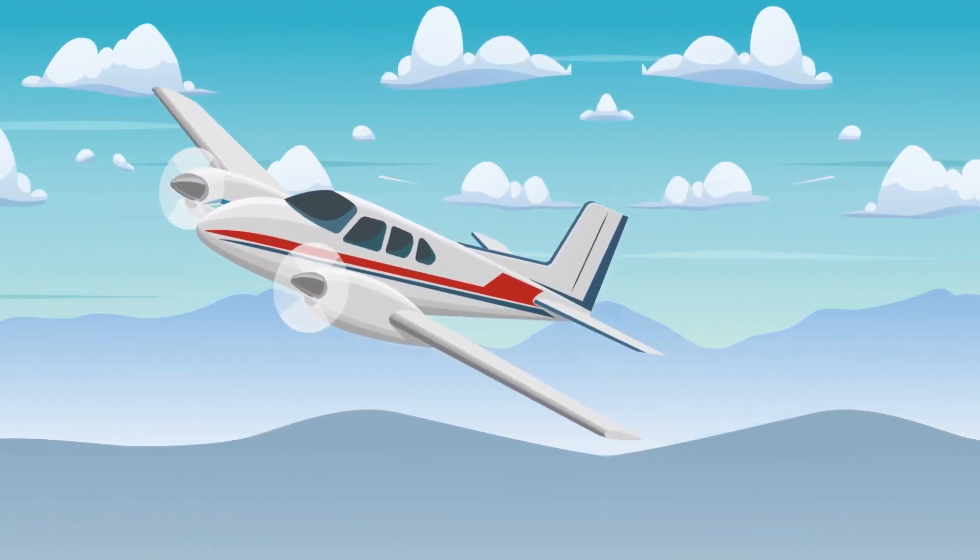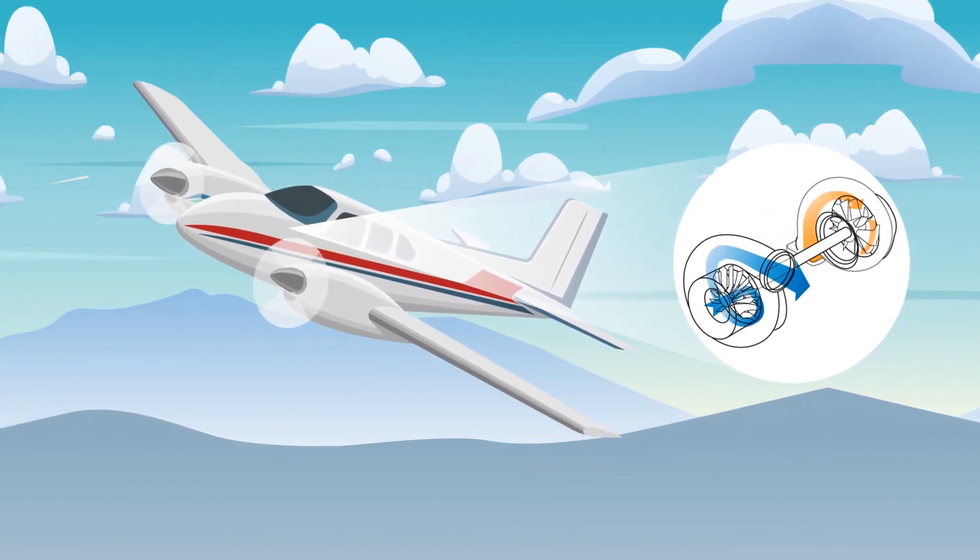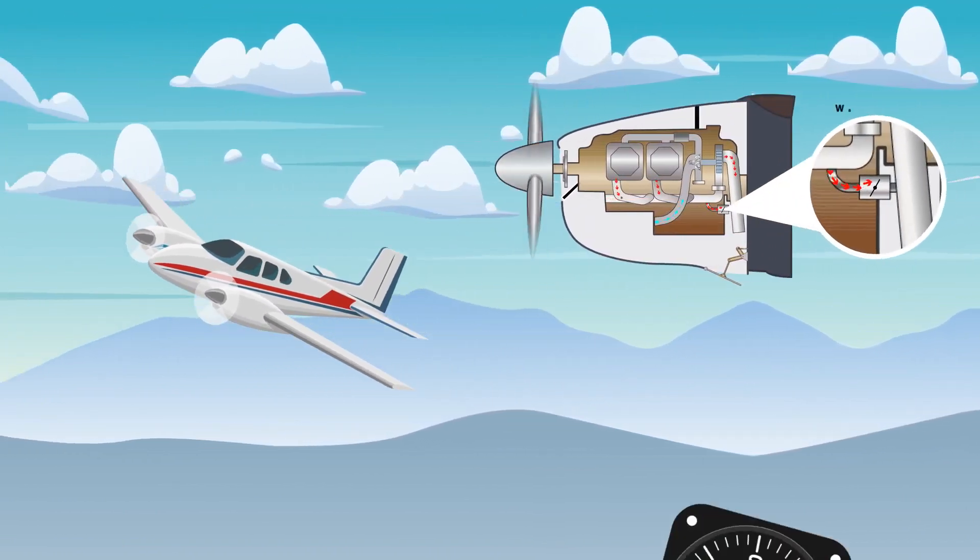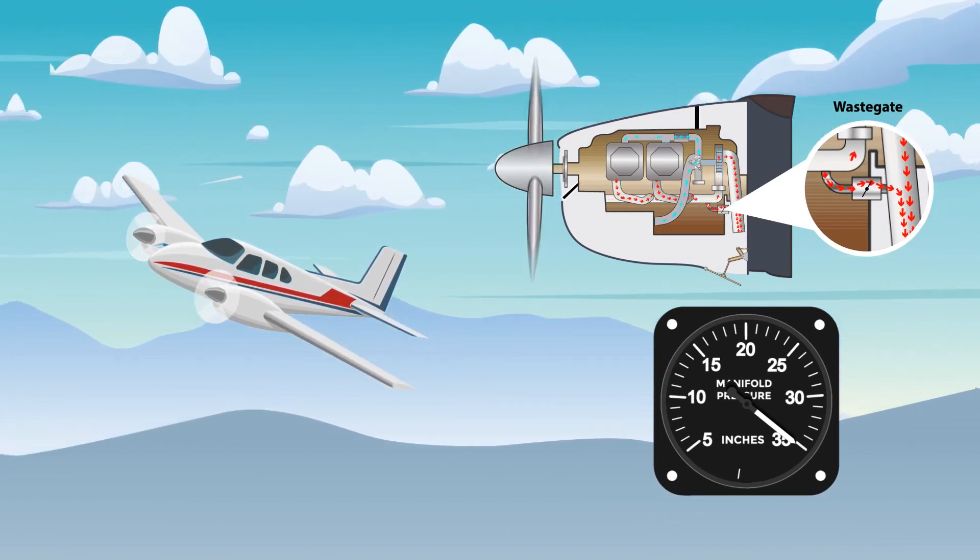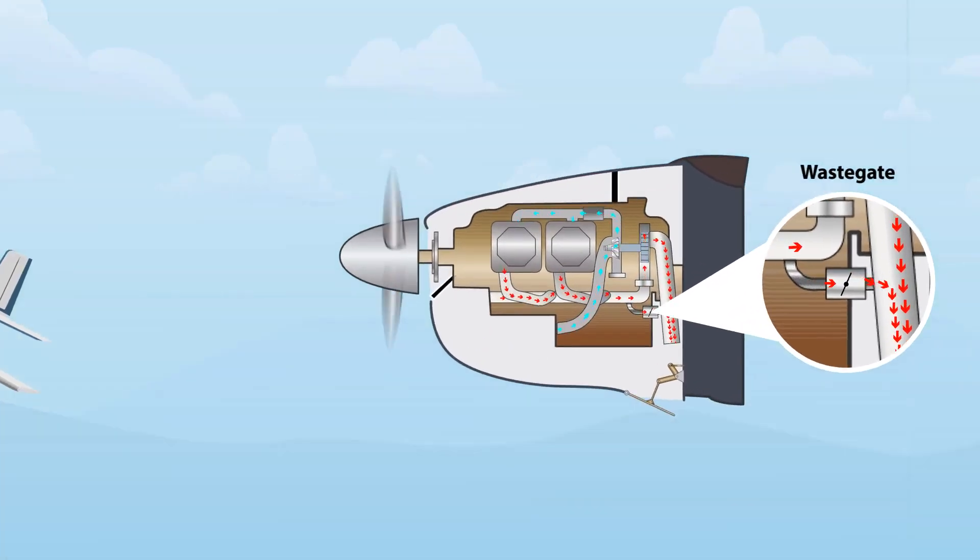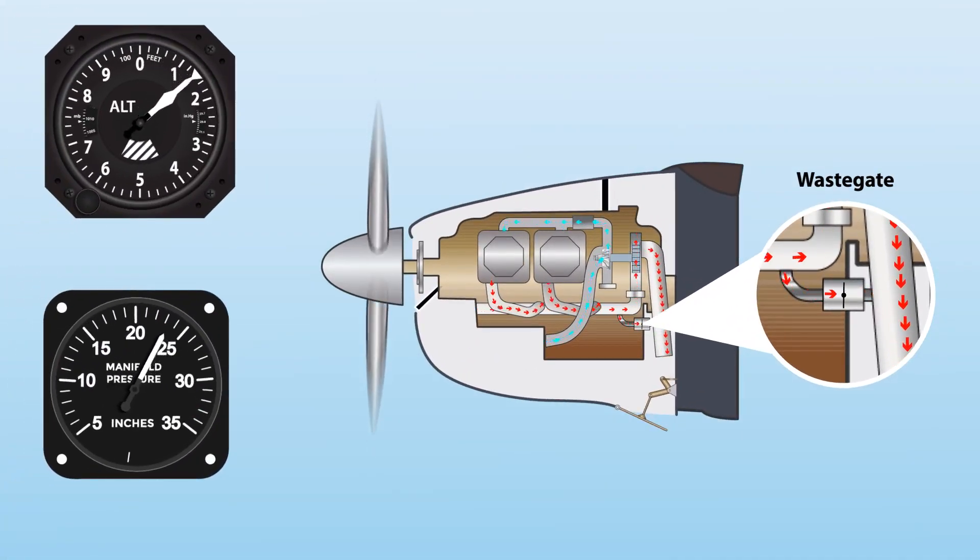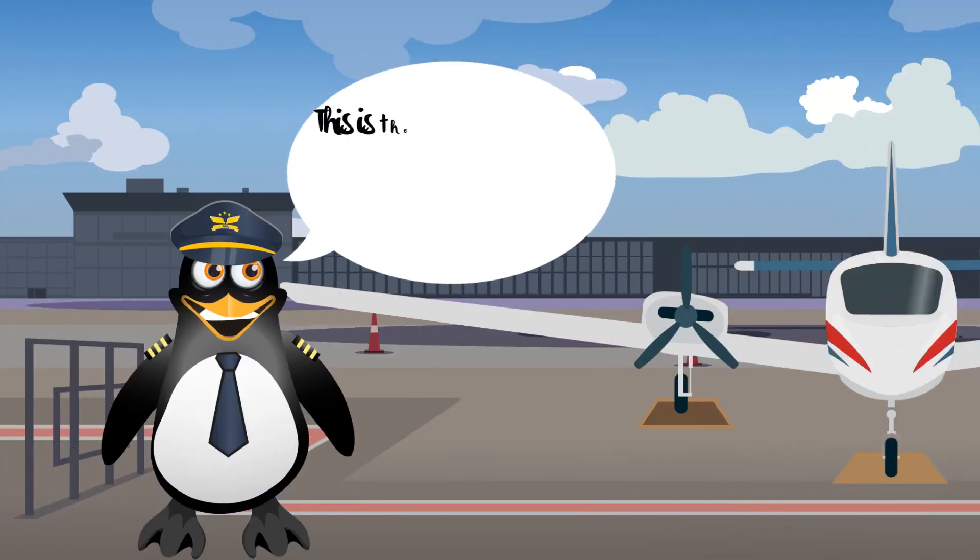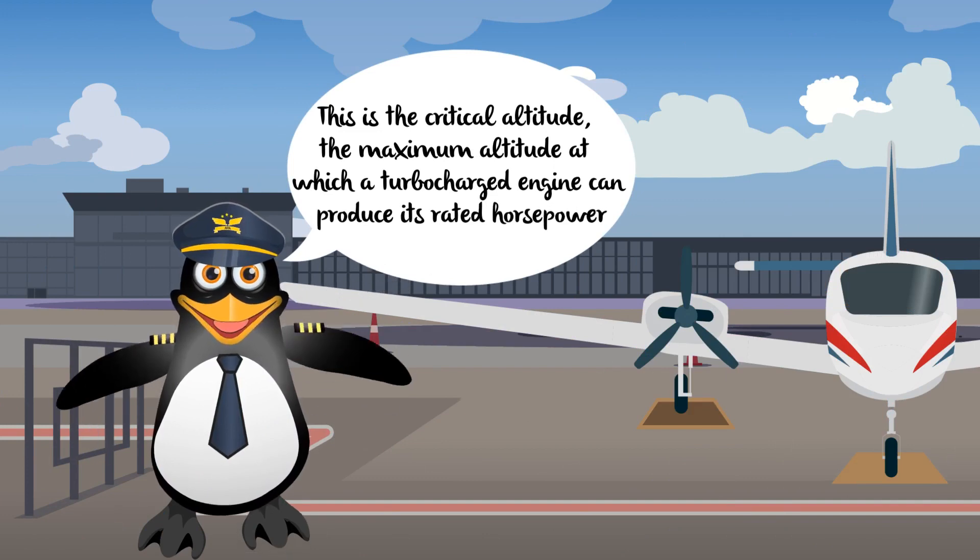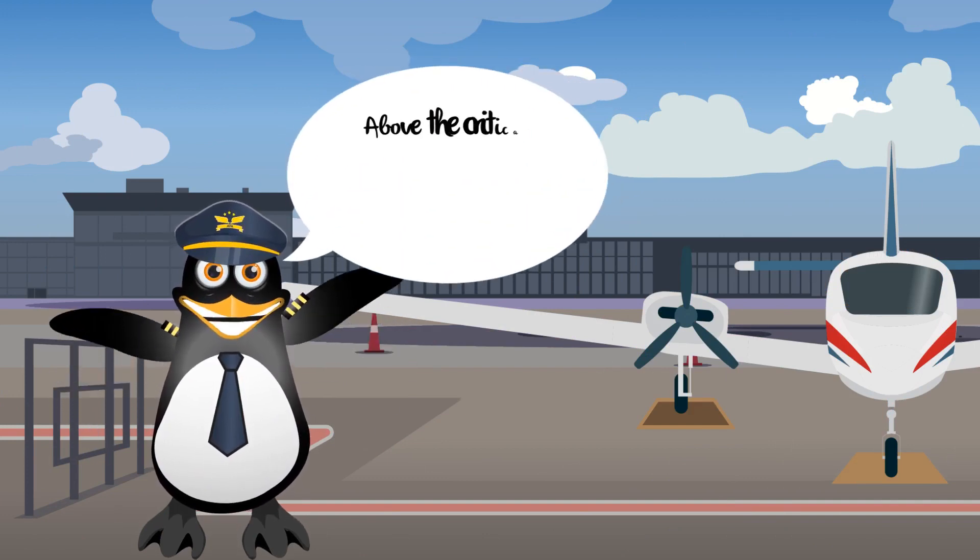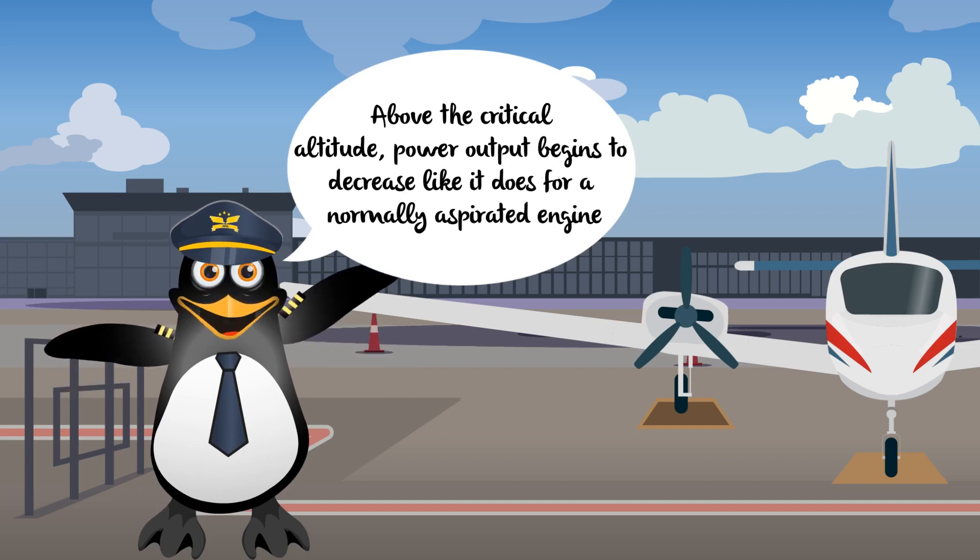Turbochargers have the ability to provide an engine's rated sea-level horsepower from sea level up to the engine's critical altitude. As an aircraft equipped with a turbocharging system climbs, the wastegate is gradually closed to maintain the maximum allowable manifold pressure. At some point, the wastegate is fully closed and further increases in altitude cause the manifold pressure to decrease. This is the critical altitude, the maximum altitude at which a turbocharged engine can produce its rated horsepower. Above the critical altitude, power output begins to decrease like it does for a normally aspirated engine.